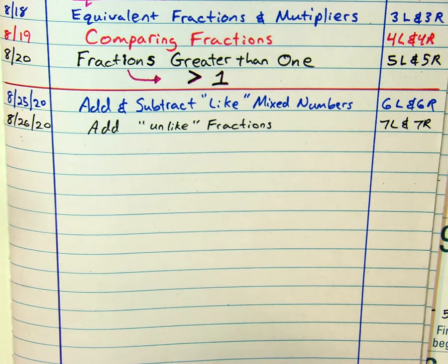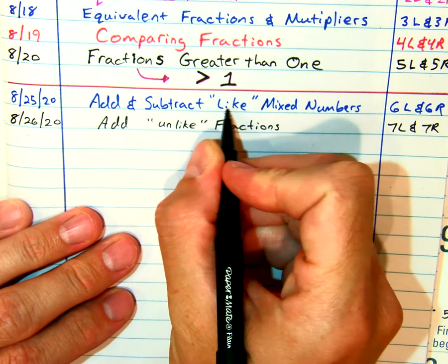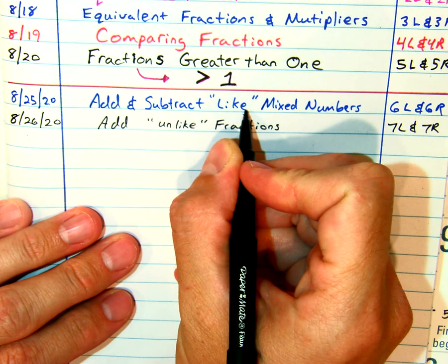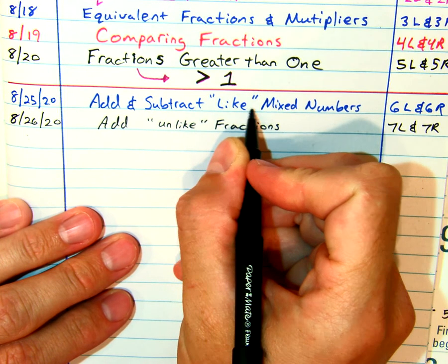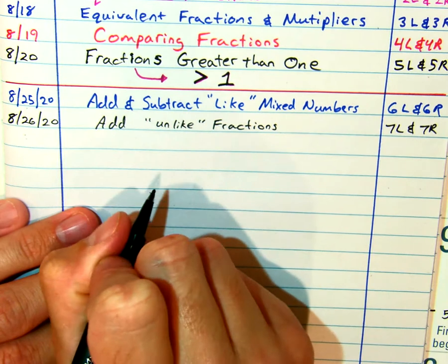Greetings mathematician. We're going to follow up yesterday's assignment of add and subtract like mixed numbers with add unlike fractions. And remember, what did like mean? They had the same what? Denominator. So if they're unlike, today the denominators will be different.